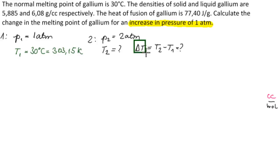This is what we're looking for here. Our answer should be in the form delta T equals this. What else are we given? We're given that rho of solid gallium is 5.885 grams per cubic centimeter, and rho of liquid gallium is 6.08 grams per cubic centimeter. And we're given the heat of fusion is equal to 77.40 joules per gram.